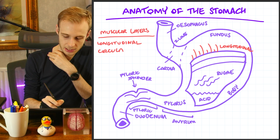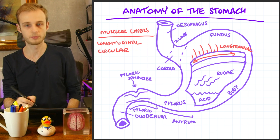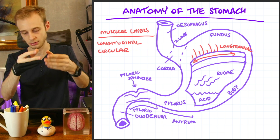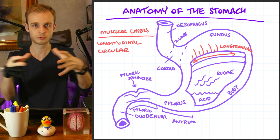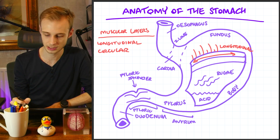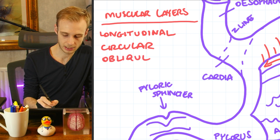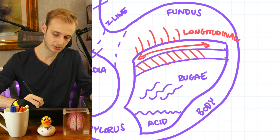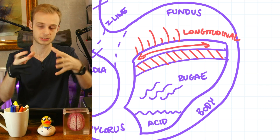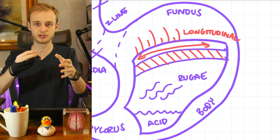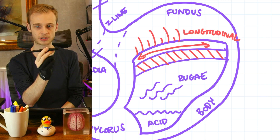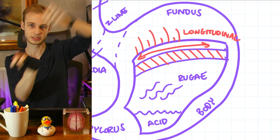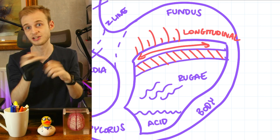The next layer is the circular layer, which runs right to left — circumferentially around the stomach — and this allows it to squeeze in the horizontal or axial plane. So we've now got top-to-bottom movement from the longitudinal layer and a squeezing motion from the circular layer. Then our third and final layer is the oblique layer, which runs at 45 degrees — not top to bottom, not left to right, but at a tangent. This gives us contraction in all three directions to ensure the stomach can pull from every direction to mechanically churn food.